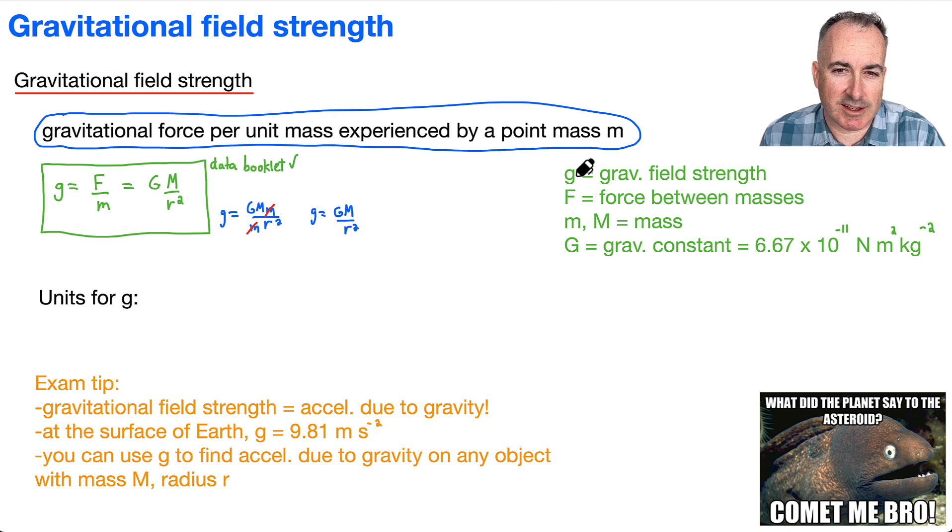So now let's take this thing called g and figure out its units. It's easier to see them from right here. If you look at the top part, F must be in Newtons over mass, which is in kilograms. So this is in Newtons per kilogram. The force between the two masses is in Newtons. The mass is in kilograms. And of course, you have a gravitational constant you just look up.